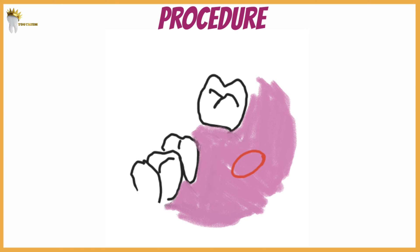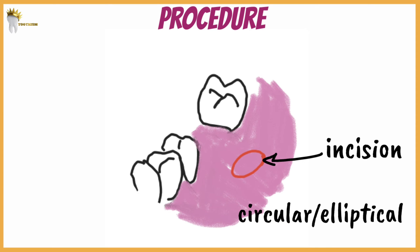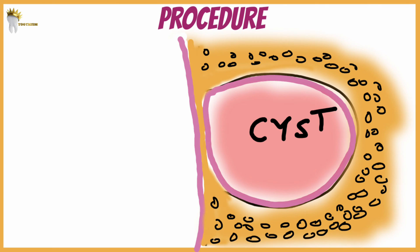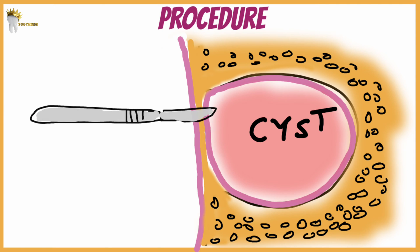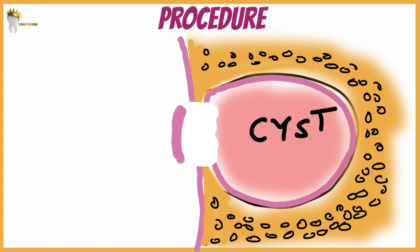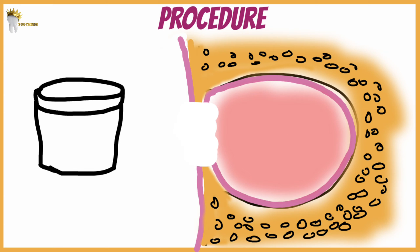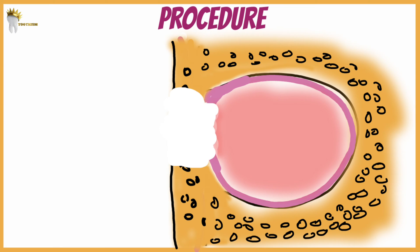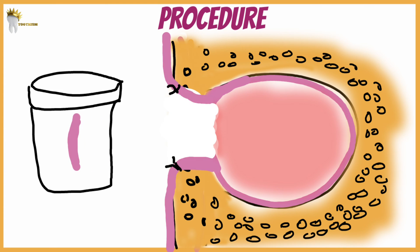Let's see how it's done. The goal is to create a window into the cystic cavity. The initial incision is usually circular or elliptical and should create a window about one centimeter or larger. If the bone overlying the cyst is very thin, the initial incision may extend through the bone directly into the cystic cavity. If the overlying bone is thick, an osseous window is created with a bur and rongeur, then a portion of the cystic lining is removed to create a window. So two windows are created: an osseous window and a window into the lining of the cyst.